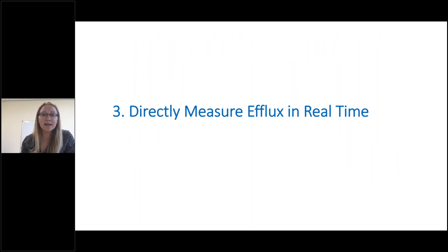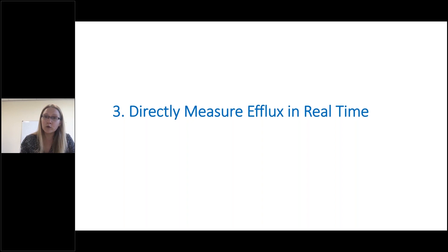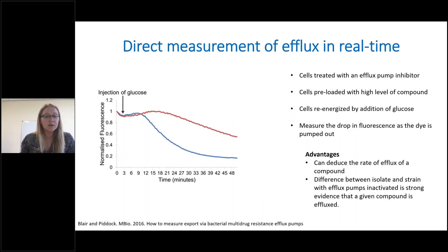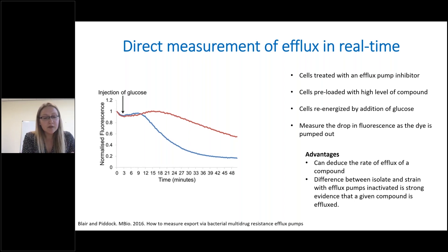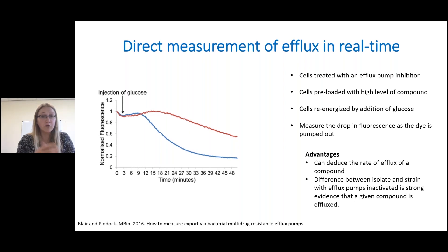The very best way to understand how much efflux is contributing to accumulation is to actually measure it directly, though I'll say it's not possible at the moment for all types of compound. In order to measure efflux, you preload the cells with as high an amount of dye as possible using an efflux inhibitor. We add a high concentration of our compound — in this case a dye — and use an efflux inhibitor, CCCP, carbonyl cyanide m-chlorophenyl hydrazone, which dissipates the proton motive force.